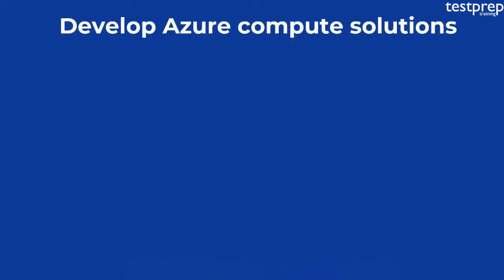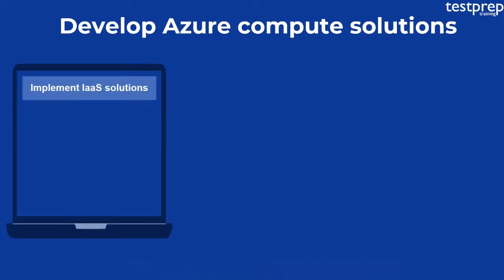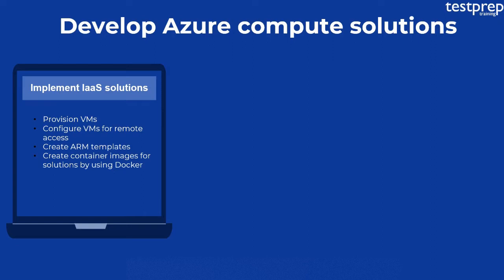Now we will talk about the course outline topics in detail. First, Develop Azure Compute Solutions. Number one: Implement IaaS Solutions. It contains six subtopics: First, provision VMs. Second, configure VMs for remote access. Third, create ARM templates. Fourth, create container images for solutions by using Docker. Fifth, publish an image to the Azure Container Registry. Sixth, run containers by using Azure Container Instance.